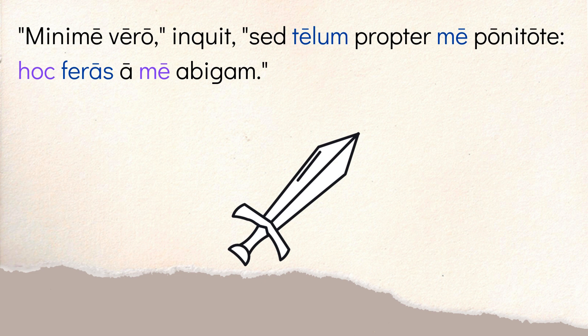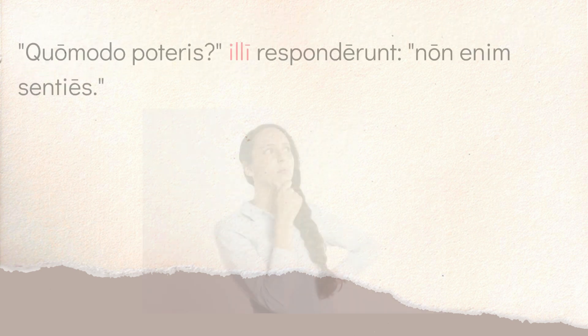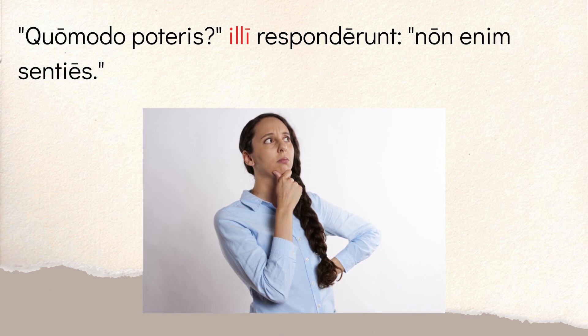He responds: 'minime vero' — not at all. Then he says 'sed telum propter me ponite' — but you must place a weapon near me. 'Ponitote' carries that sense of obligation: place a weapon beside me. Then 'hoc abigam' — with this I will drive off — 'feras' the wild beasts — 'a me' from me. So he's saying: give me a weapon and I'll use it to drive off the wild animals from eating me when I'm dead.